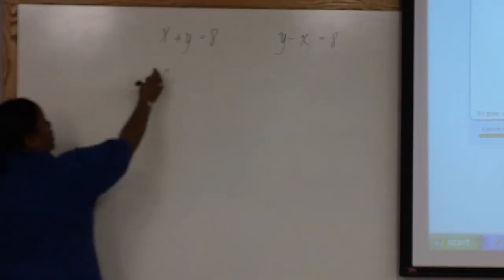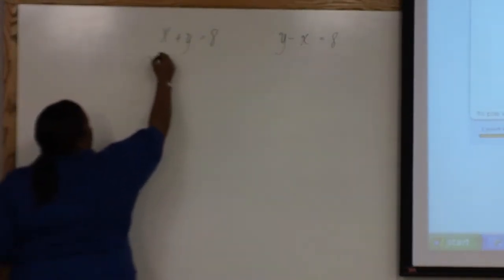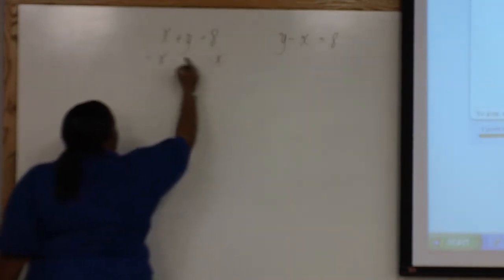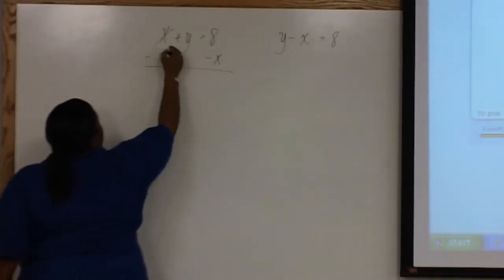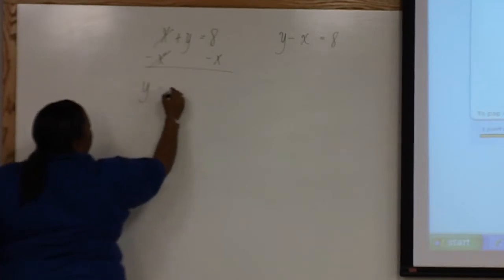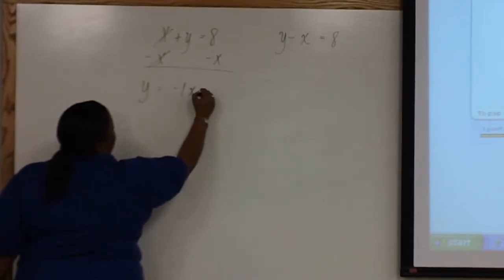The first thing we'll do to solve this equation for y is subtract x from both sides of the equation. Now we have y equals negative 1x plus 8.